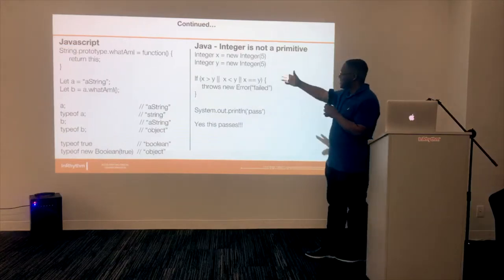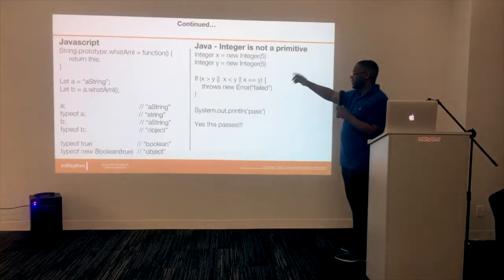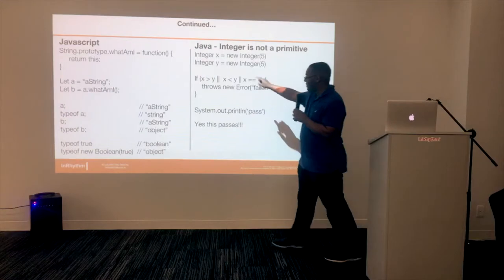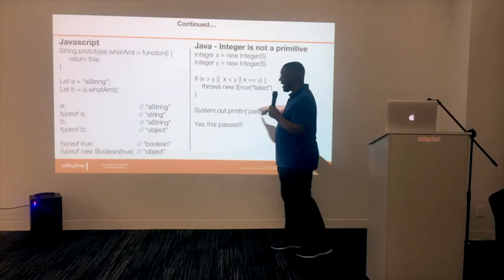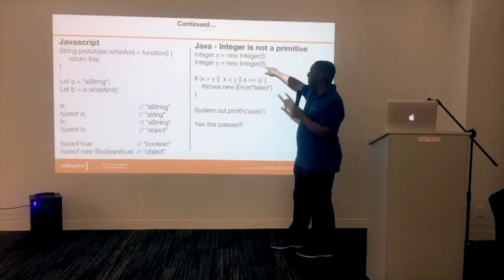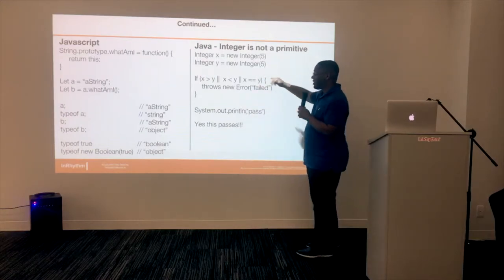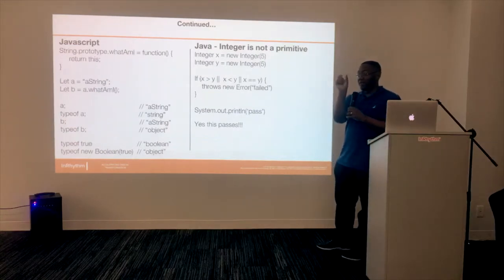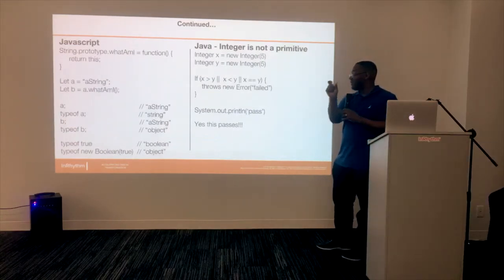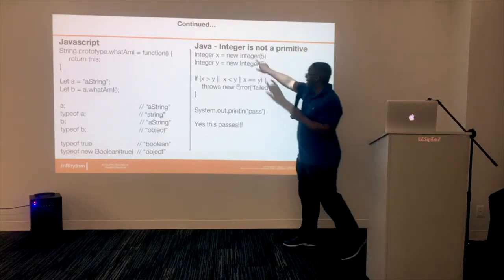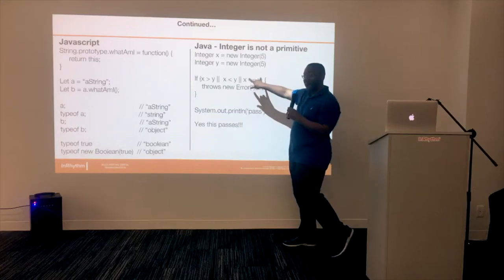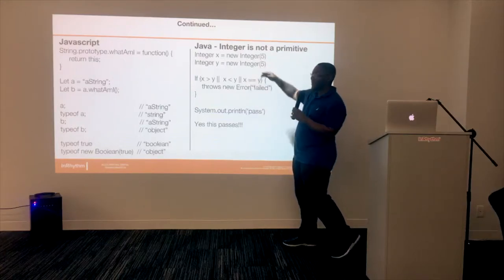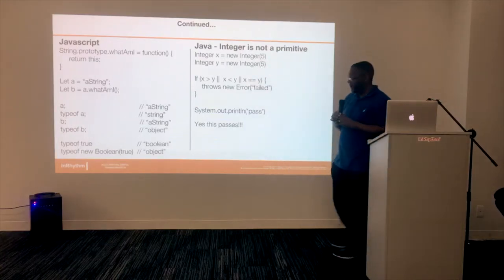In Java, this is actually an interview question I've seen before. You have to get this to print out 'pass.' Because of what I was saying about integers — they're technically passed by value, so they're pointing to the value of the reference. This actually won't pass, even though it looks the same, because they're pointing to different places in memory.